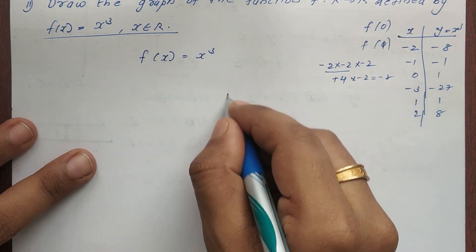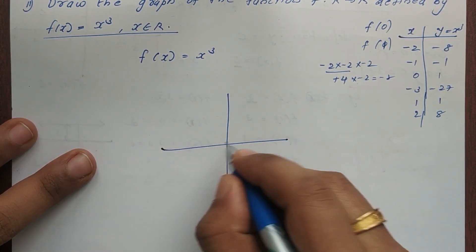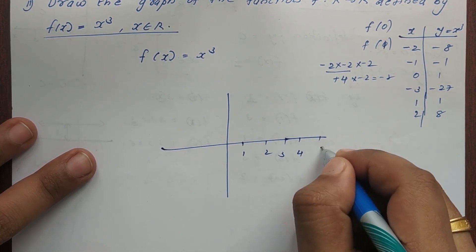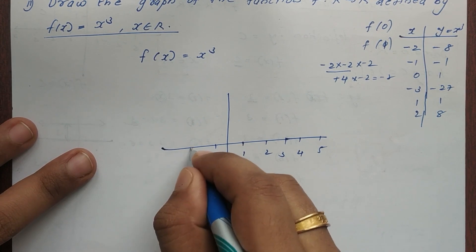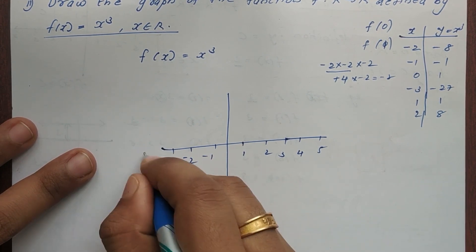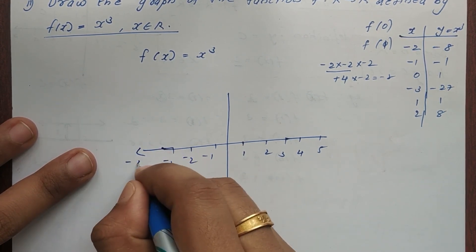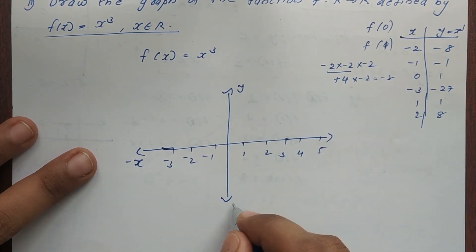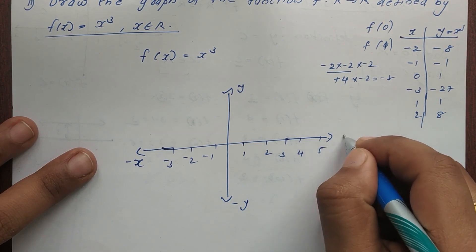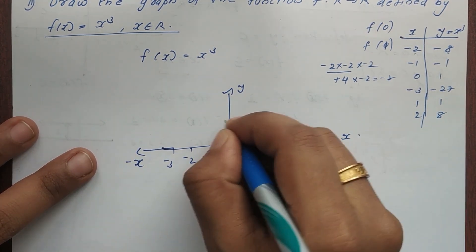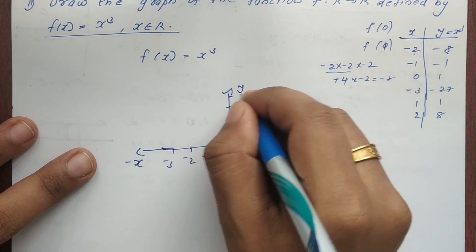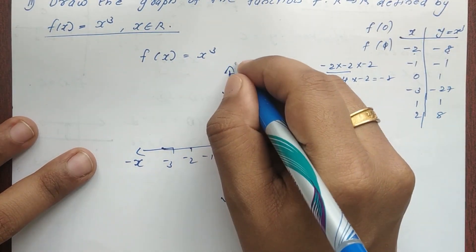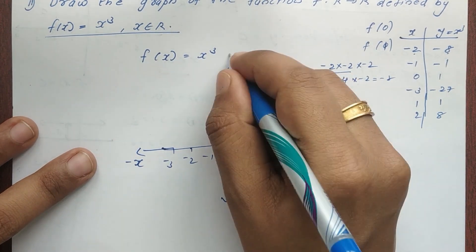And I am going to plot the graph. Let's plot the graph. I mark 1, 2, 3, 4, 5 on the positive x-axis and minus 1, minus 2, minus 3 on the negative x-axis. This is minus x, this is y, and this is minus y. On the y-axis I extend up to 1, 2, 3, 4, 5, 6, 7, 8.